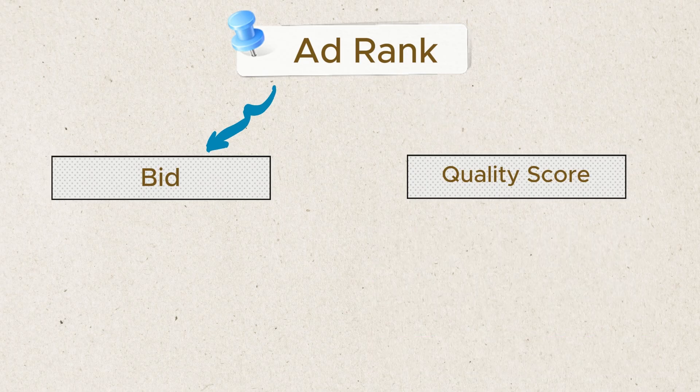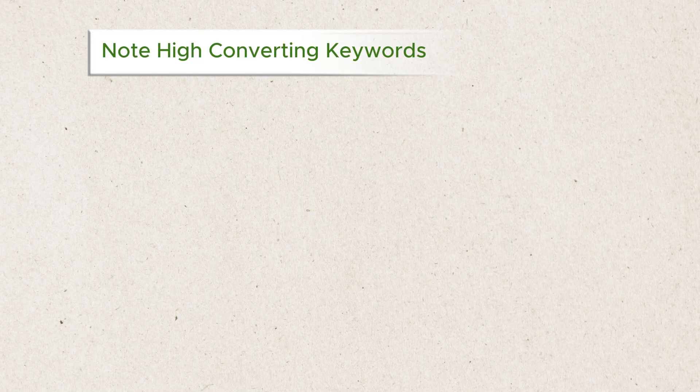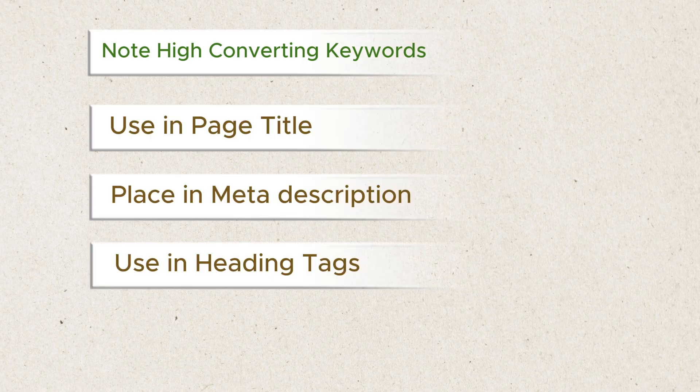That is where the landing page comes into play. To get a better landing page experience in Google Ads, you need a list of keywords that have very high conversion rates and are working well for you, because Quality Score is determined for every keyword. Make sure you place those keywords naturally in your title, meta descriptions, and heading tags of the page — no keyword stuffing, just natural placement so Google finds it relevant.